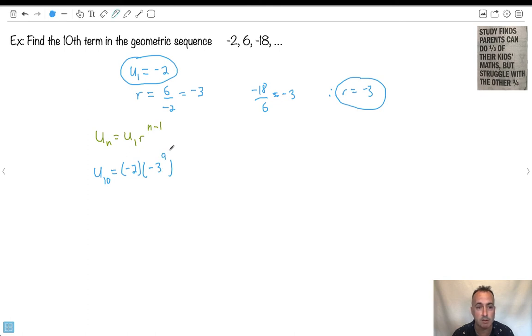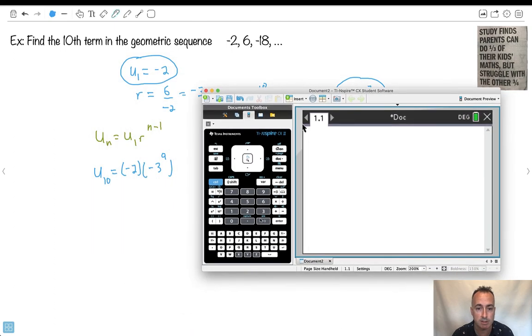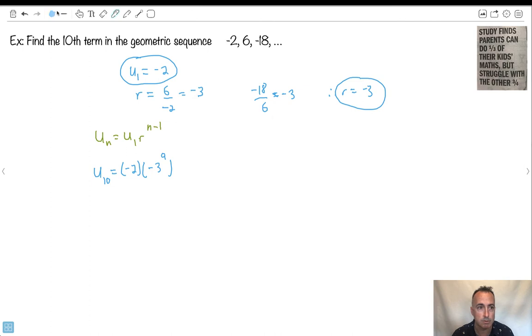This is very important. I want to show you something important here. Do not go negative 2 times negative 3 and all that then to the power of 9. That is not how you do it. You have to remember your order of operations. Do you remember the order of operations? Maybe you've learned this a long time ago. It's important because we've all agreed upon a set of rules for doing math. So we have to follow those rules.